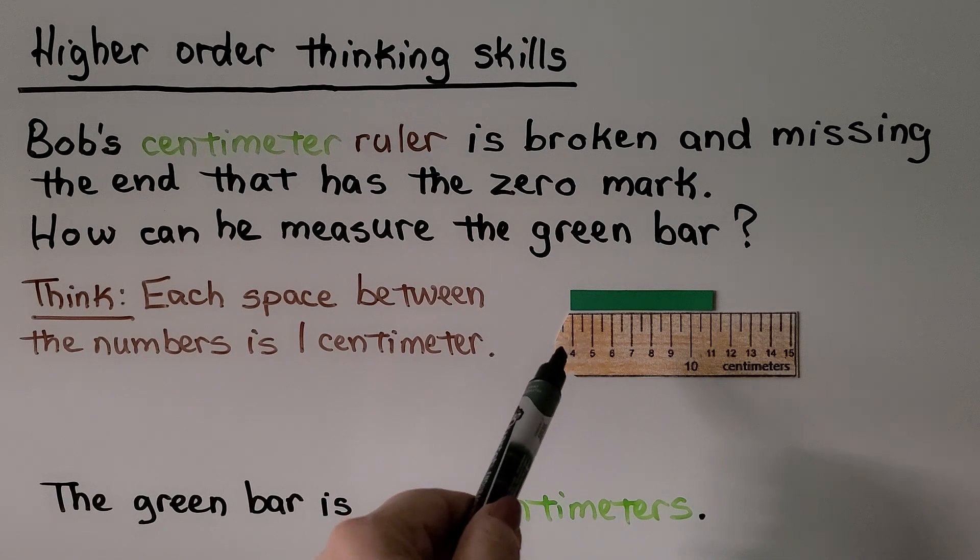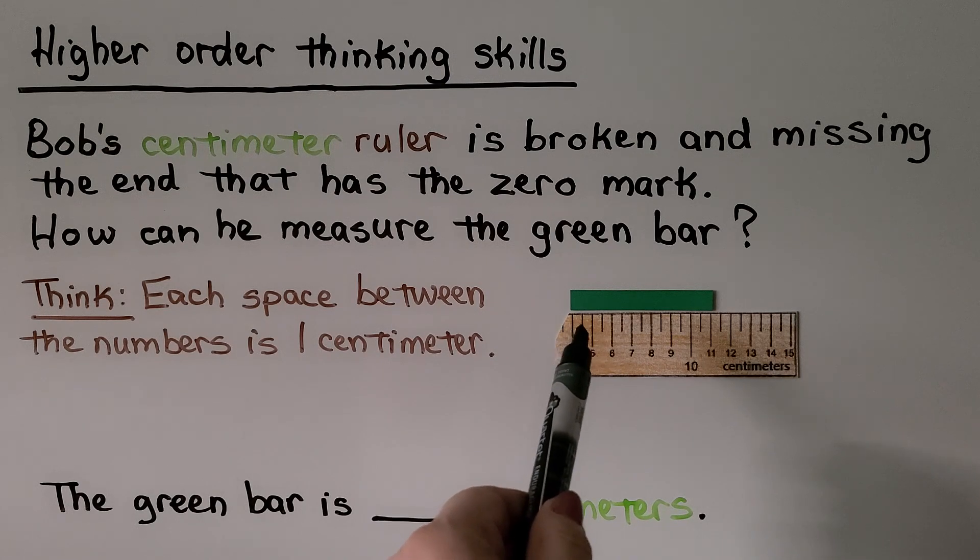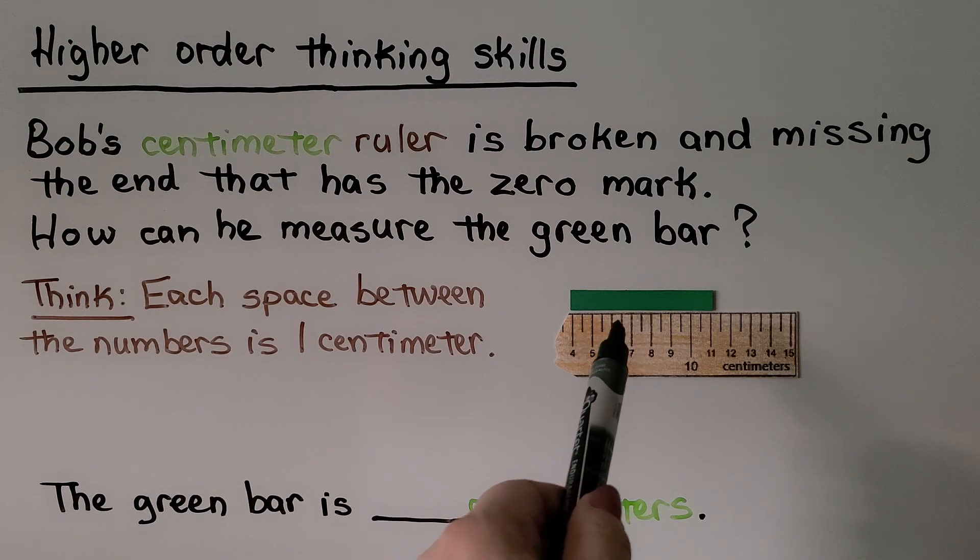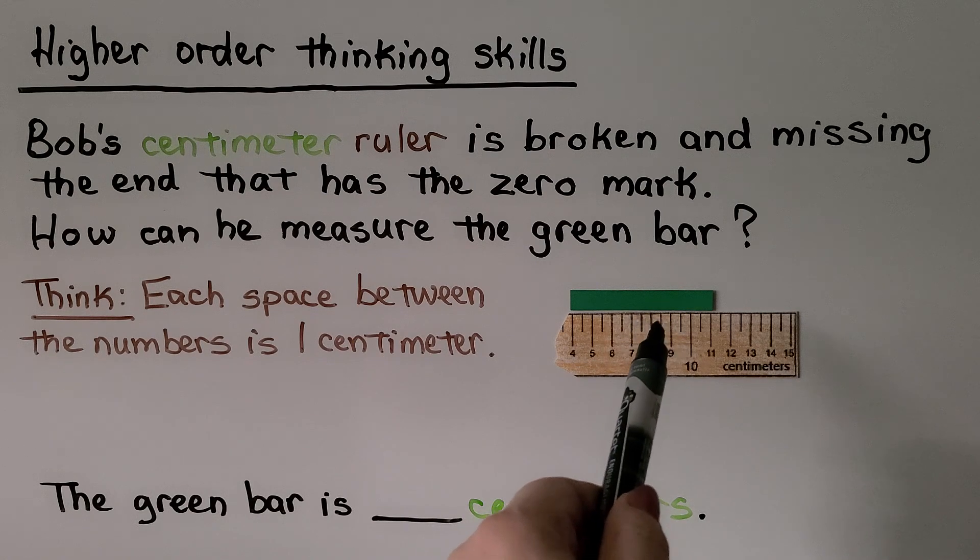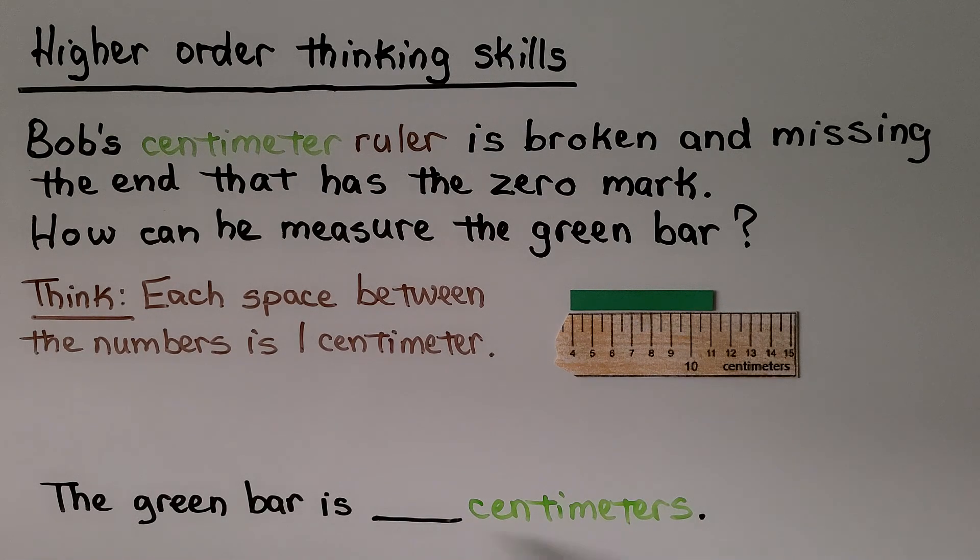If we line the end of the object up with a centimeter mark like the 4, we can count the spaces in between: 1, 2, 3, 4, 5, 6, 7. So the green bar is 7 centimeters.